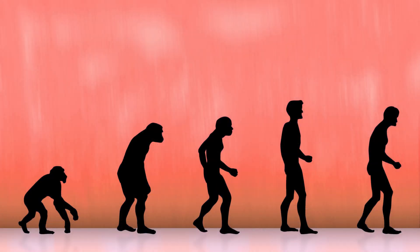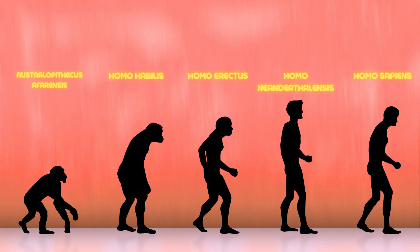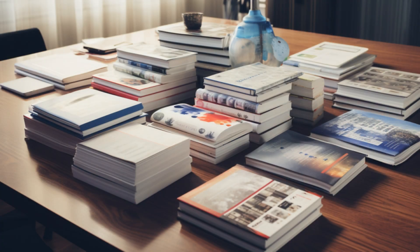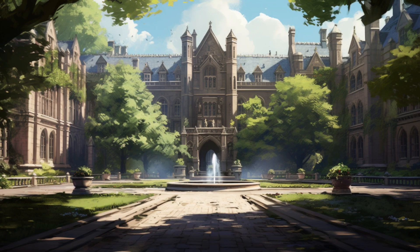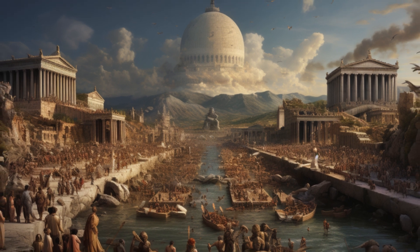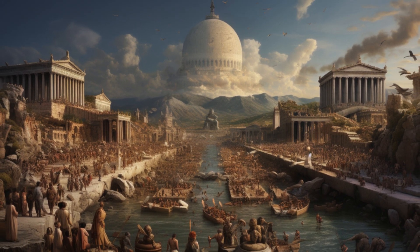Neo-Darwinism, which combines Darwin's theory of natural selection with modern genetics, is the most accepted synthesis for understanding human evolution. It provides a strong scientific basis and is supported by a vast body of evidence from various fields, making it the prevailing theory in evolutionary biology. Interested in learning more about our common human history? Here's a video about Neo-Darwinism.